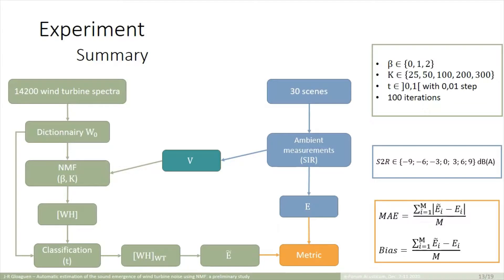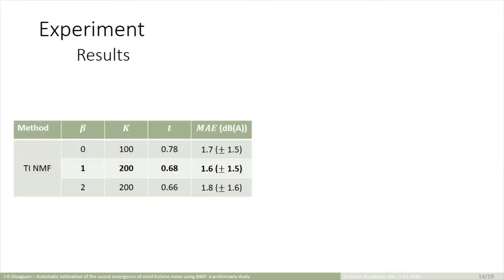And finally, with the emergence estimated by NMF and the exact emergence, we can compute an estimation error through the mean absolute error, displayed here. And bias is also added to help us to interpret the behavior of the method.